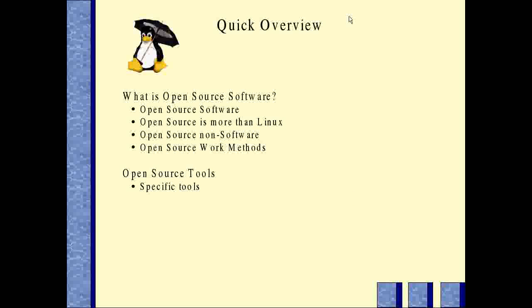Quick overview: what is open source? In my view, open source is a lot of things, and it's actually a lot more than just software. We have open source software, which means software that comes with the source code, or software for which the source code is available. There are two types of software. There is the source code, which is code that looks like algebra, that programmers write to tell the computer what to do.